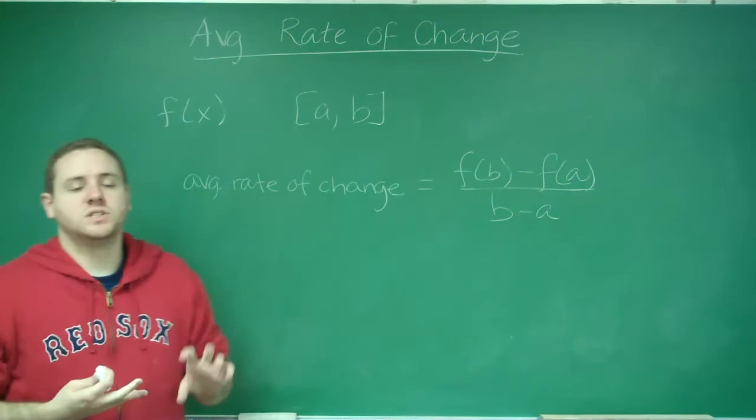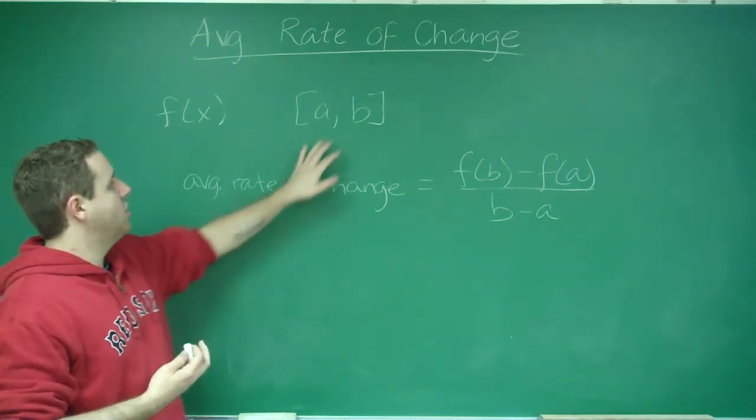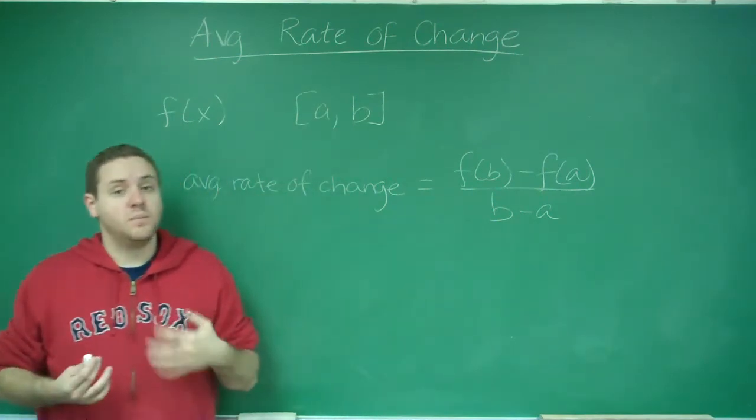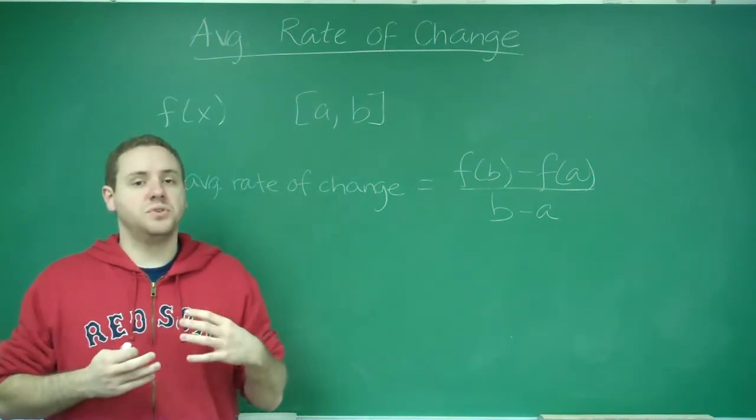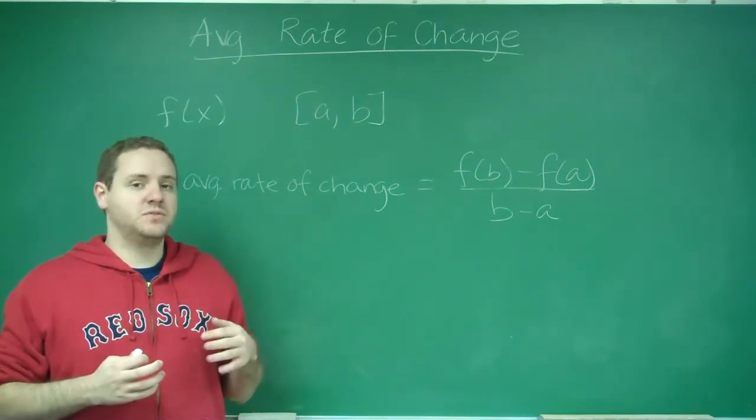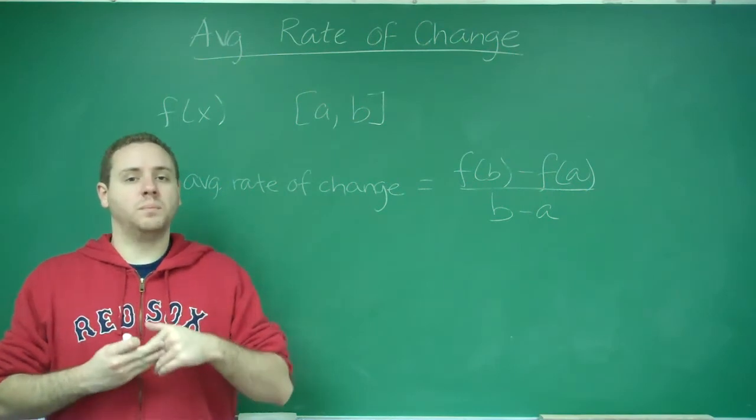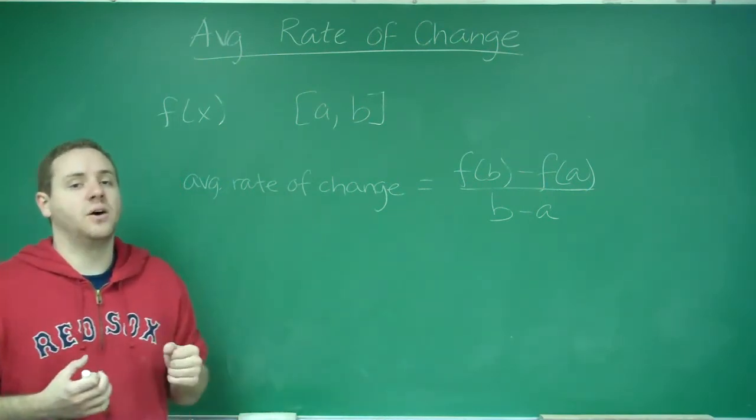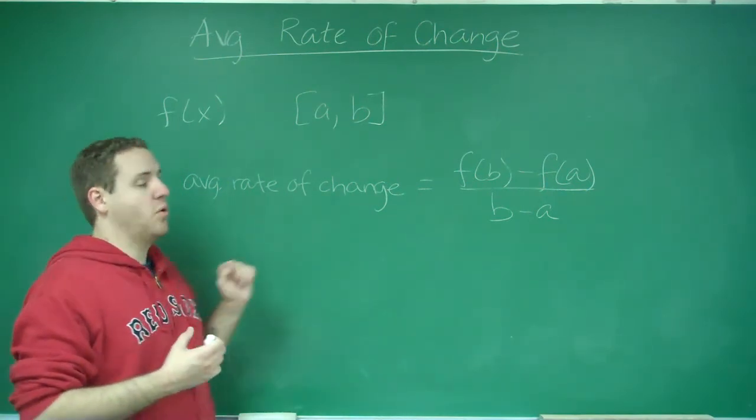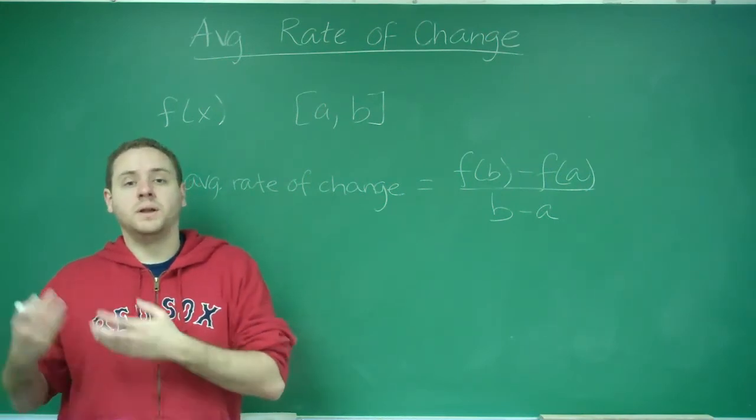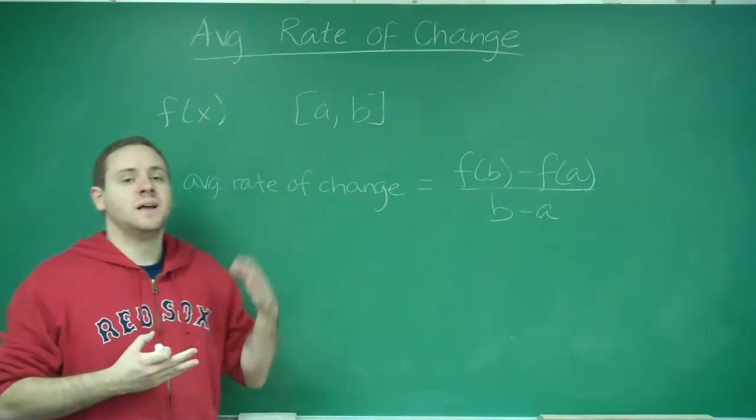Just keep in mind that the average rate of change, they're always going to have to give you an interval, because it has to be between two things, whereas with your derivative, the instantaneous rate of change, you're only taking it at one point. So that's one way you can always tell if you're going to do the derivative or the average. If you're given one point, derivative. If you're given two points, average.